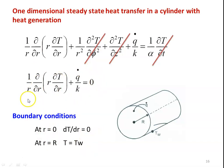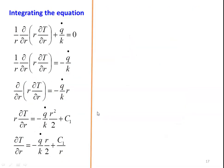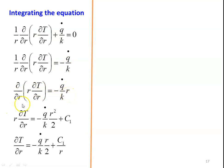We solve the governing equation with the boundary conditions. Integrating the equation: starting from (1/R)(d/dR)(R · dT/dR) + Q̇/K = 0, we rearrange to d/dR(R · dT/dR) = −(Q̇/K)·R. Integrating the first time gives R·(dT/dR) = −(Q̇/K)·(R²/2) + C1.